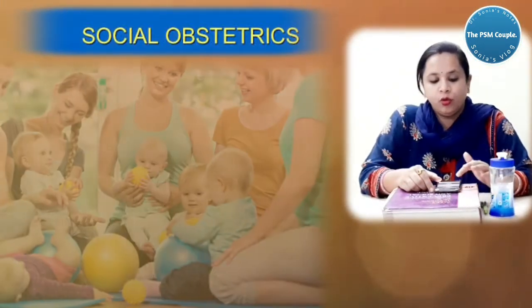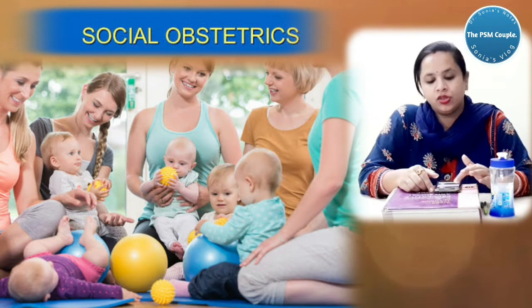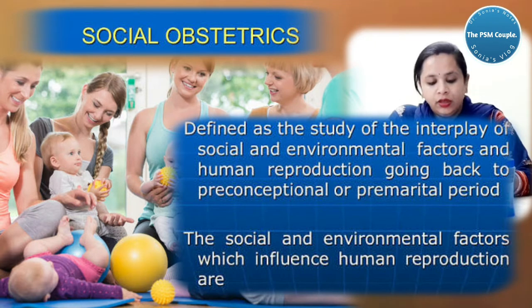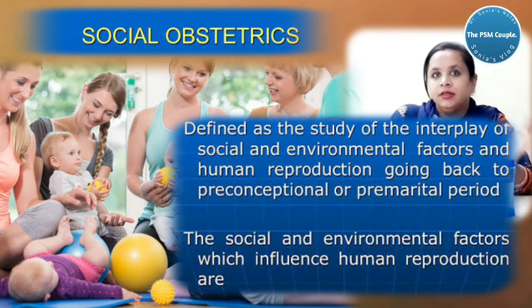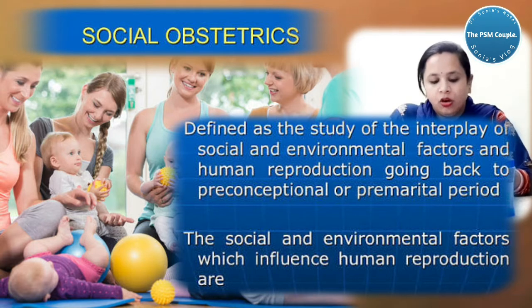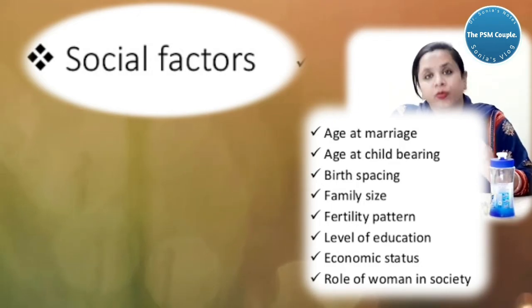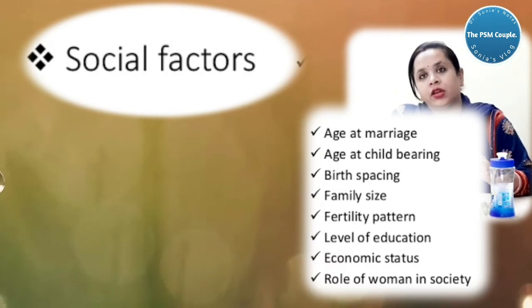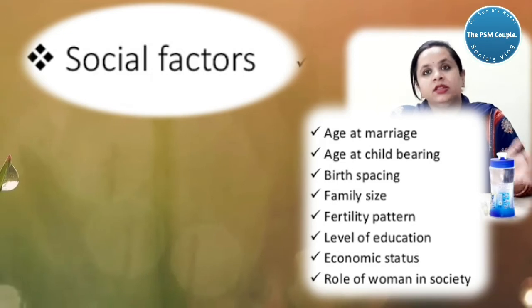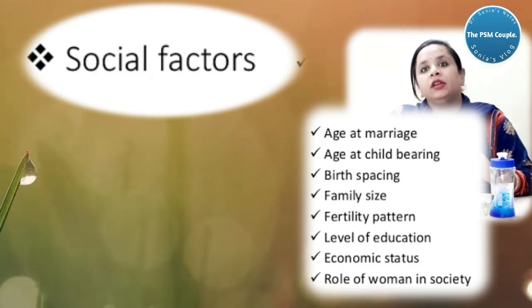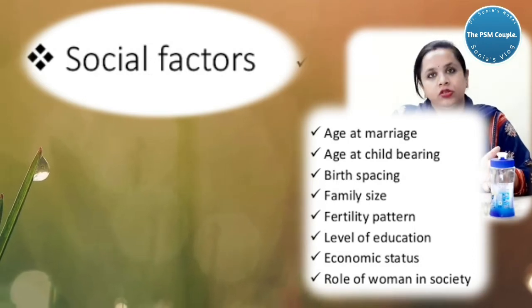Now next definition is social obstetrics. The study of interplay of social and environmental factors and human reproduction, going back to the preconception or even premarital period. The factors can be age at marriage, the childbearing period of a woman, family size, level of education, economic status, the customs in the family and the role of women in the society. So when you talk about social factors and the women of the reproductive age group, that definition denotes social obstetrics.